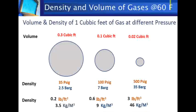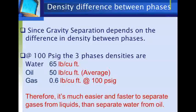Further increase in pressure to 500 PSIG (33 bar G) leads to more reduction in gas volume, reaching 0.02 cubic foot, with density increasing to 3 pounds per cubic foot (46 kg/m³). Whatever the increase in gas pressure, there is still a large difference in density between gases compared to oil or water. The difference in density between oil and water is less than the difference in density between gases and any of the produced liquids.